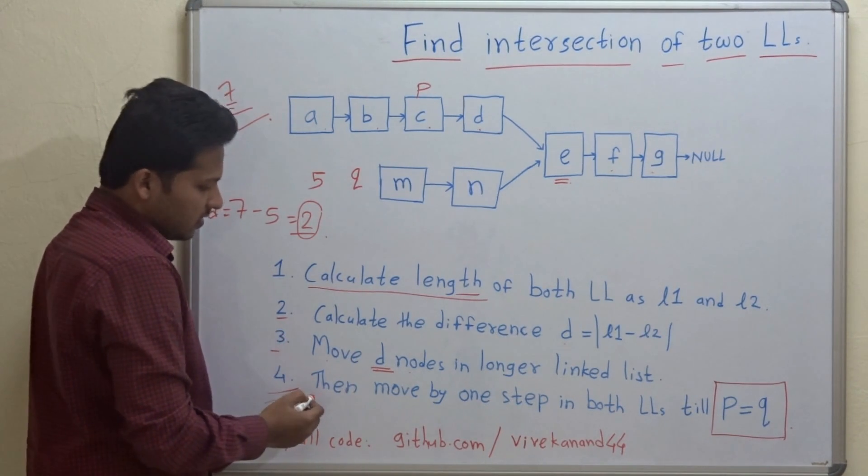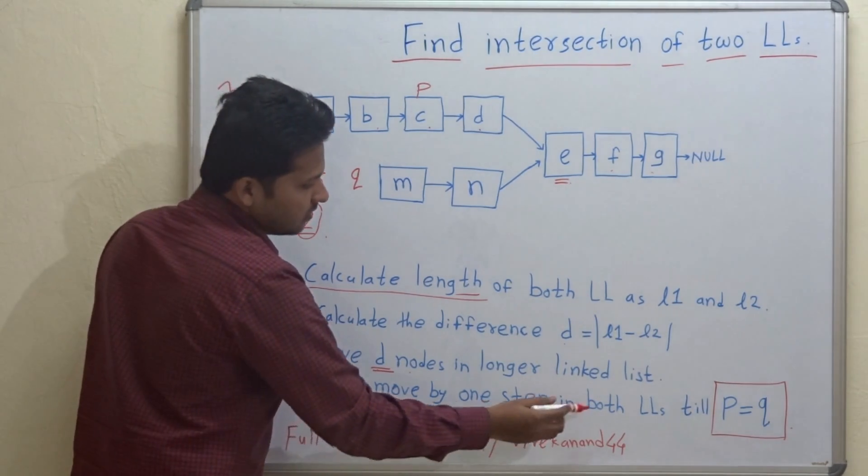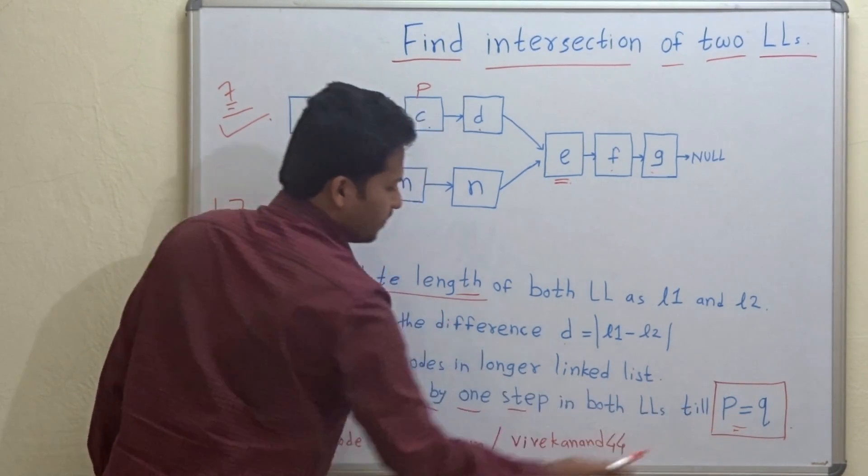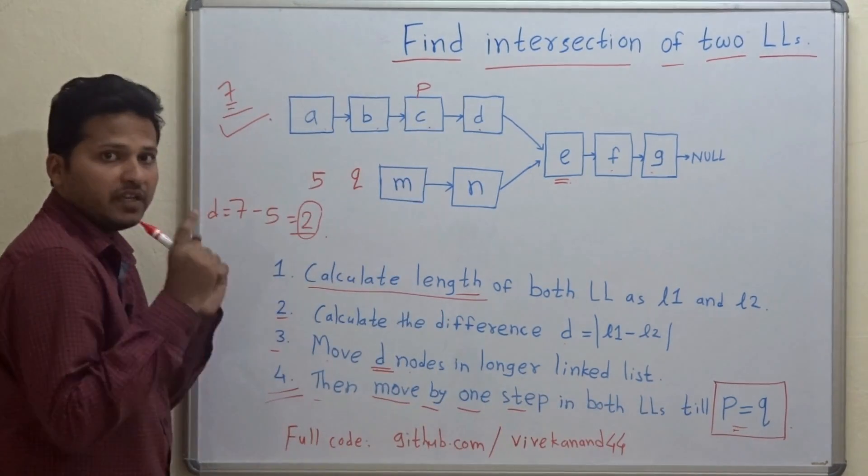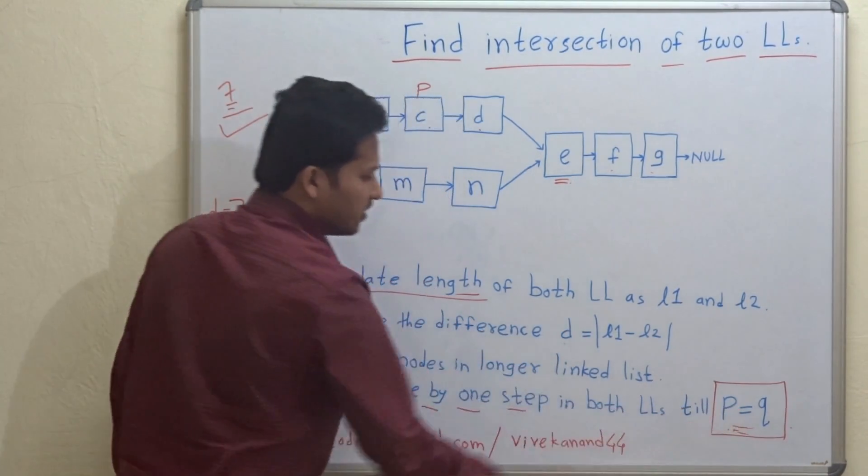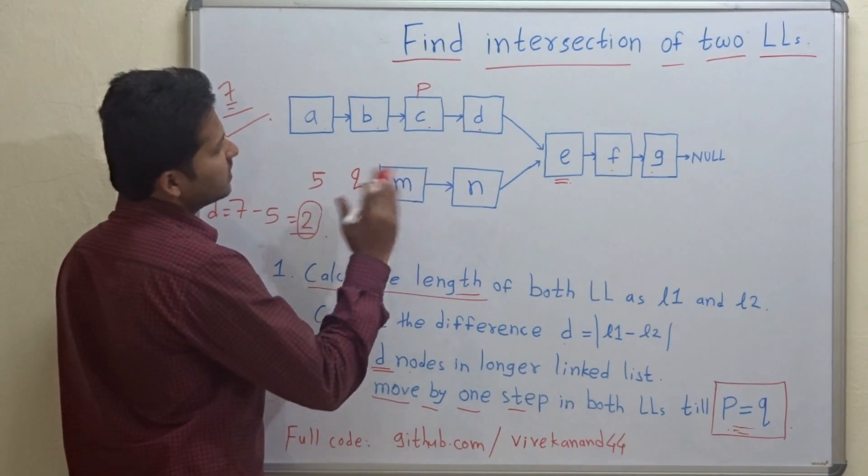The fourth step is then move by one step in both linked lists till P is equal to Q. Means this step will be in while loop. The breaking condition will be P equal to Q. So let's move both the pointers by one step.